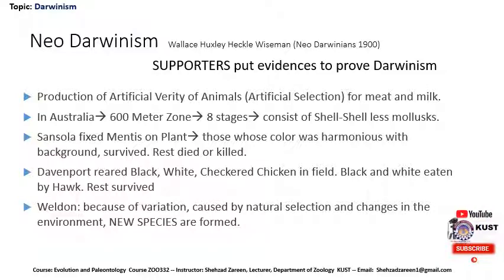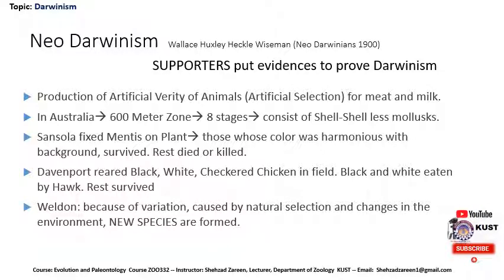They discovered a 600-meter zone in Australia divided into 8 stages consisting of shelled and shell-less mollusks. The shell-less mollusks were present in areas where there were no predators, while the shelled mollusks were present in areas where there were many predators. It means that the shells of the mollusks were used to protect them from predators — and this is what is called survival of the fittest. In another experiment, researchers affixed green, brown, and different-colored mantises on plants. Those whose color was harmonious with the background survived, while the rest were killed by their predators.